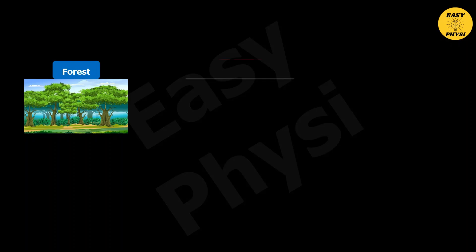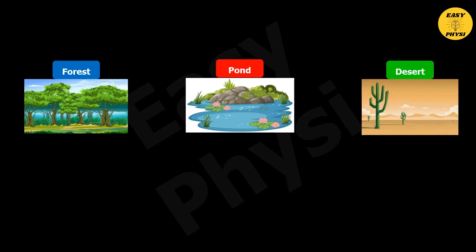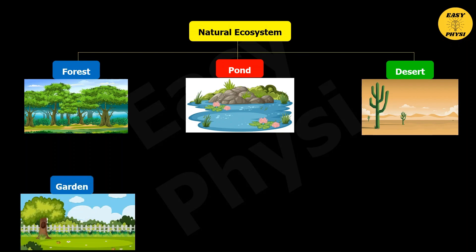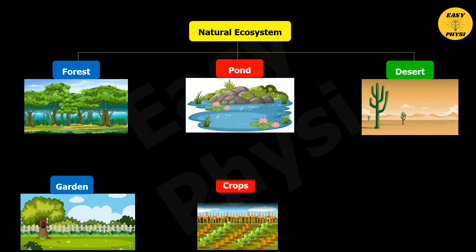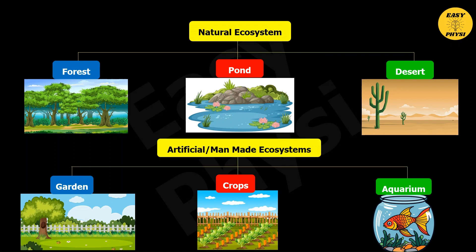Forest, pond, and desert are all examples of natural ecosystems, while the garden, crops, and aquarium are examples of artificial or man-made ecosystems.